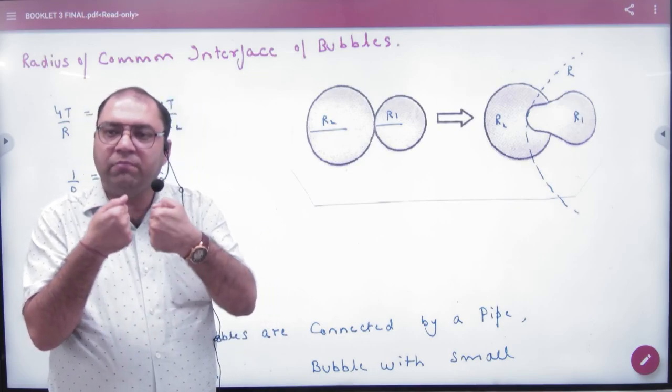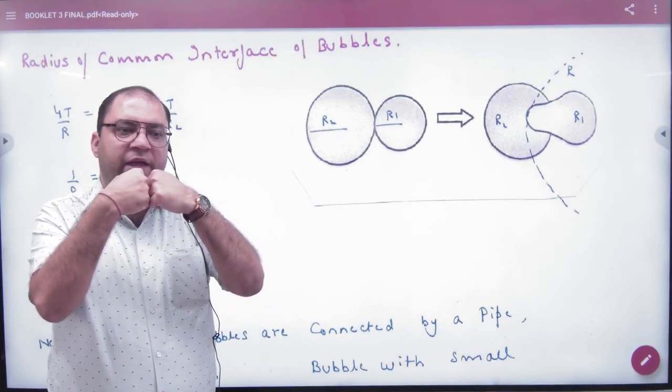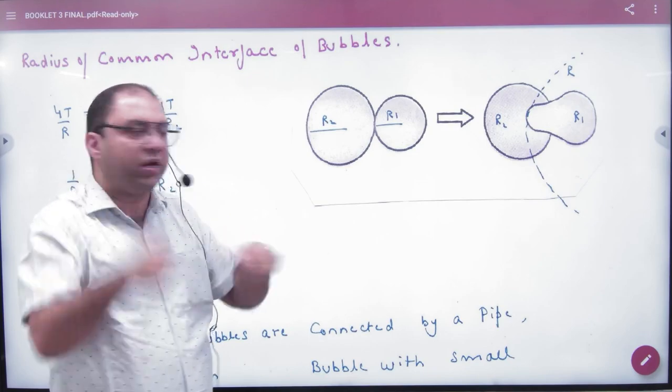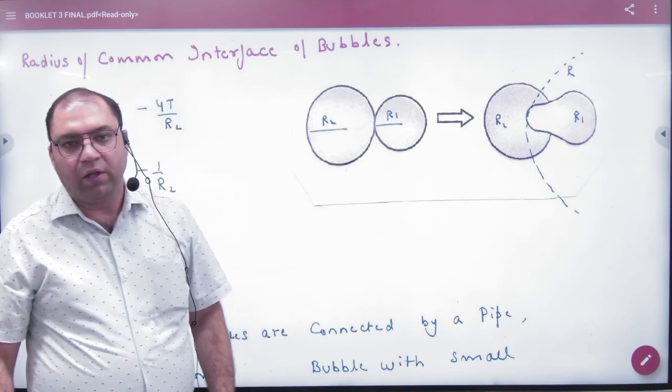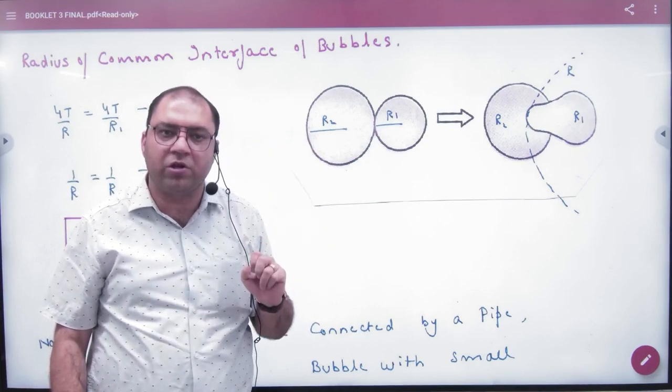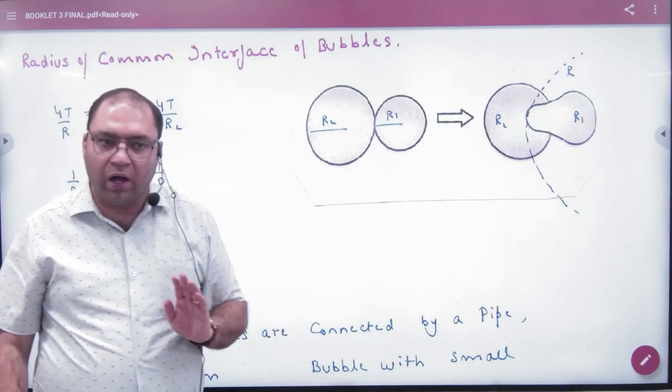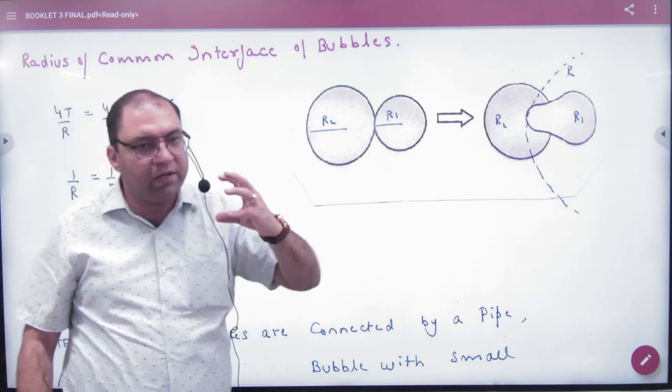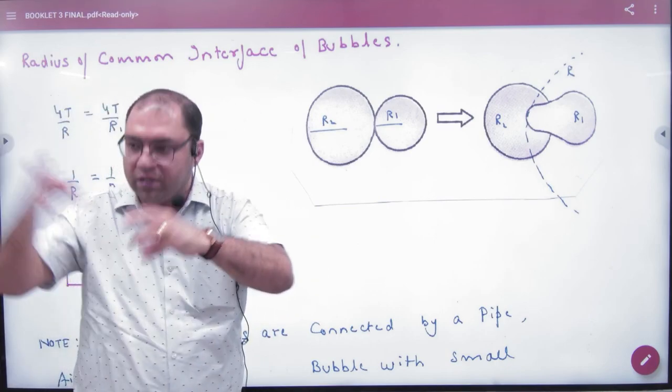Now when they come in contact, the interface of the boundary will not be like this. It will be like this because the small radius means more pressure. Because pressure is 4T by R, if the denominator is greater, the pressure will be greater, and the big bubble will be less.